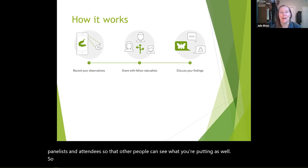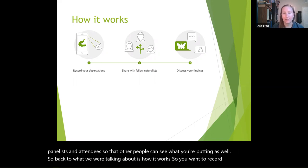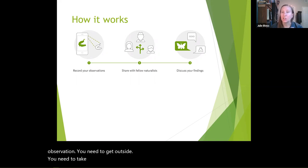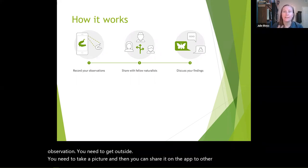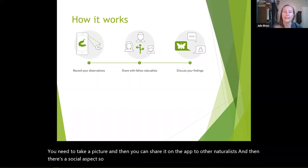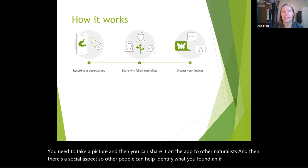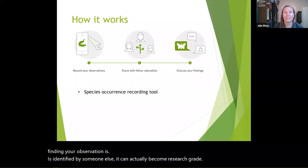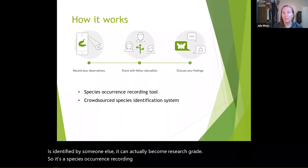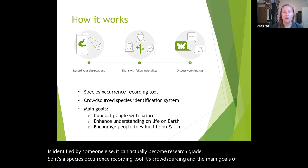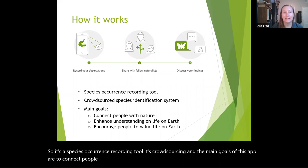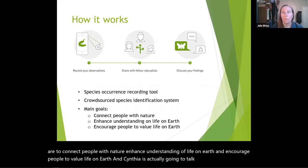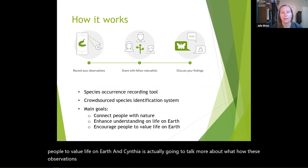Back to how it works: you record your observation by getting outside, taking a picture, and sharing it on the app with other naturalists. There's a social aspect where other people can help identify what you found. If your observation is identified by someone else, it can actually become research grade. So it's a species occurrence recording tool — it's crowdsourcing. The main goals of this app are to connect people with nature, enhance understanding of life on earth, and encourage people to value life on earth.